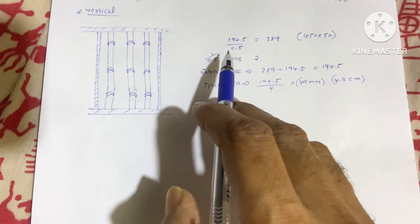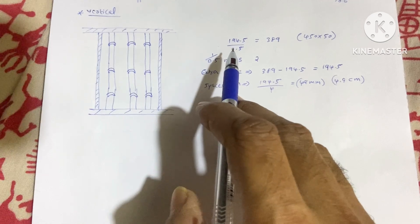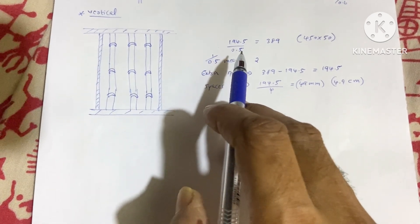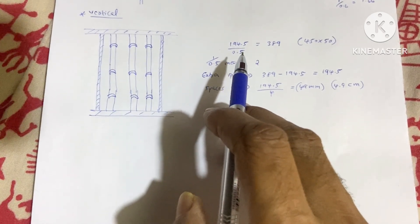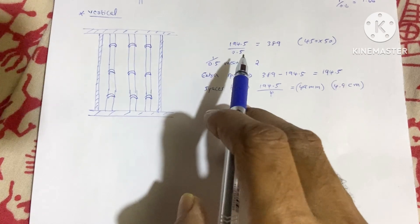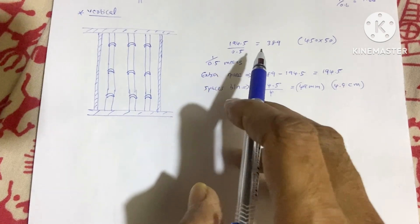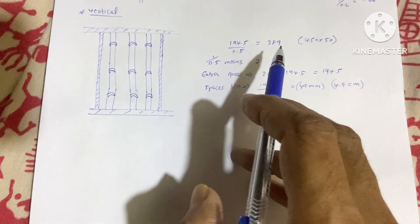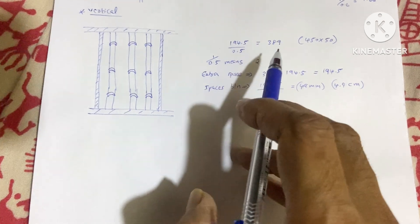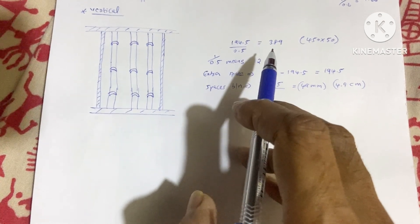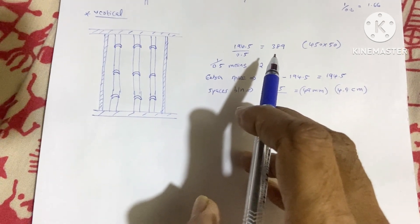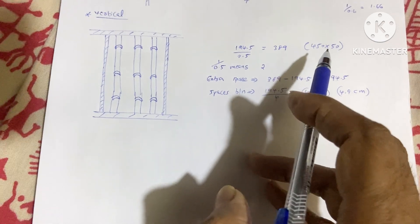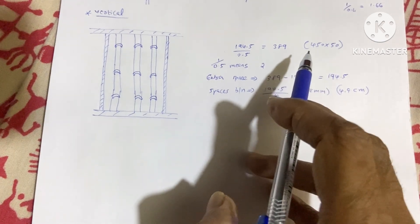For the vertical cable tray, we use a safety factor of 0.5 instead of 0.6. Dividing 194.5mm by 0.5 gives 389mm. Since 389mm is not a standard size, we again select a 450×50mm cable tray.